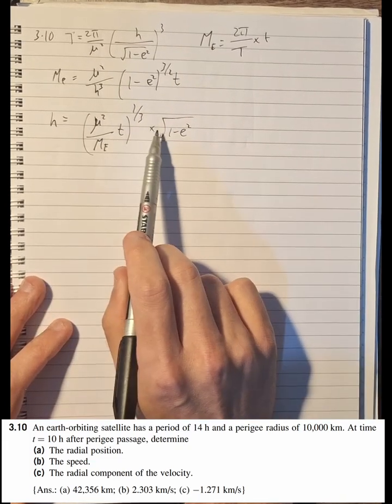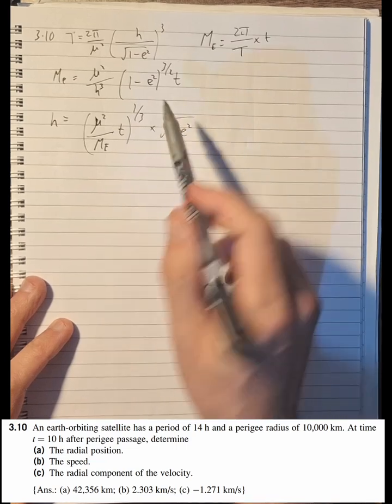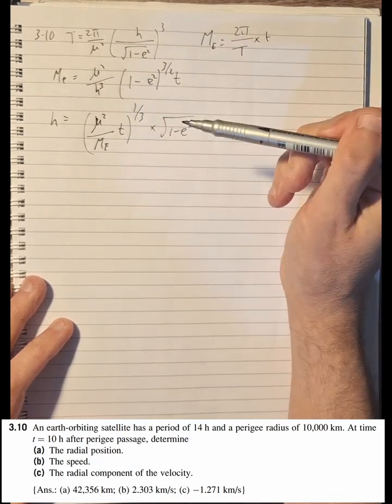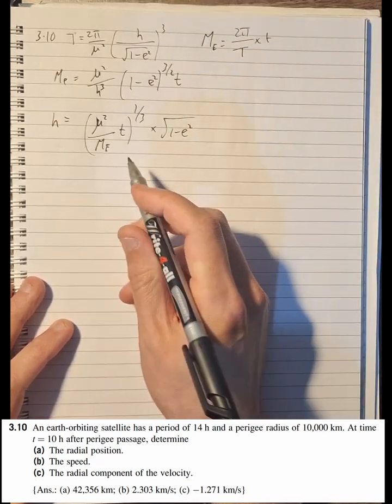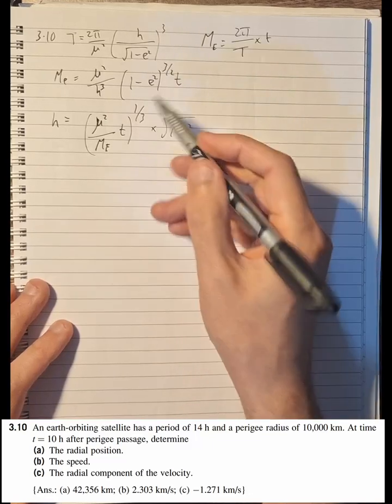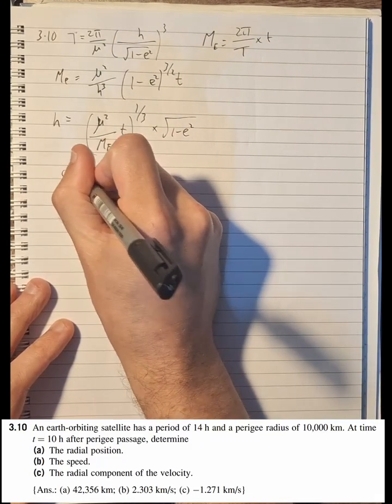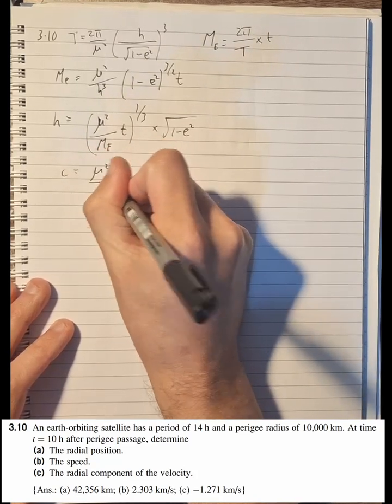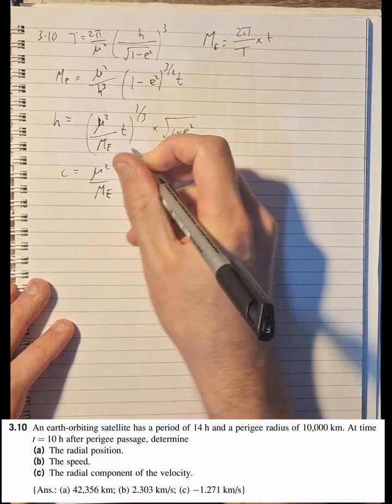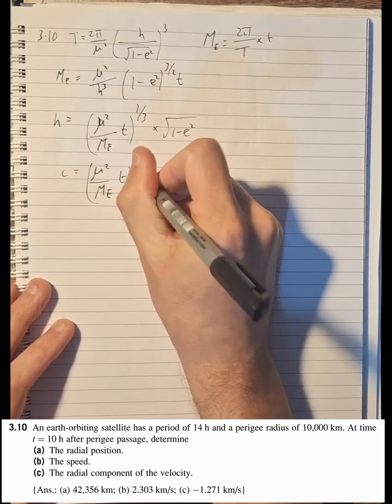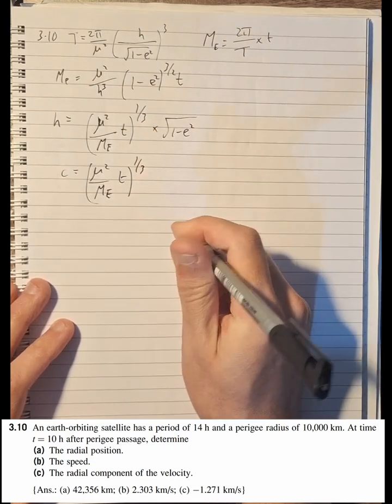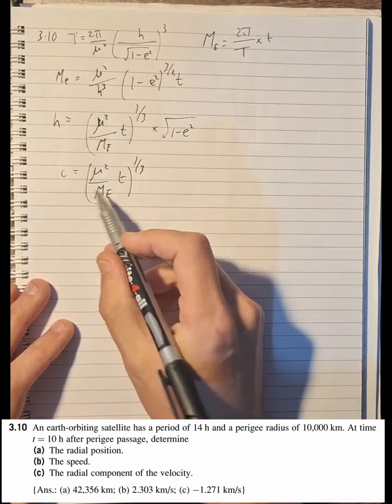So this is nice now, and then we're going to bring this out as a constant because we know all these. So that's going to become c = (μ²/M_e×t)^(1/3), and now that we have that constant.